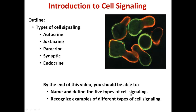The goal of this video introduction to chapters 16 and 17 is to provide an introduction to cell signaling. We're going to be discussing the five types of cell signaling: autocrine, juxtacrine, paracrine, synaptic, and endocrine. By the end of this video you should be able to name and define these types of cell signaling as well as recognize examples of each type.